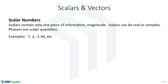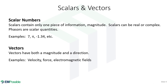On to scalars and vectors. Scalar numbers are just a single number — a single piece of information, sometimes called magnitude or amplitude. Scalars can be real or complex numbers, and phasors we're interpreting as scalar quantities. Vectors are like two pieces of information at once: they have a magnitude and also a direction. For example, driving on the highway you have a speed and a direction. In electromagnetics, our fields will have a strength and will also be pointing in a direction — true for both electric and magnetic fields.